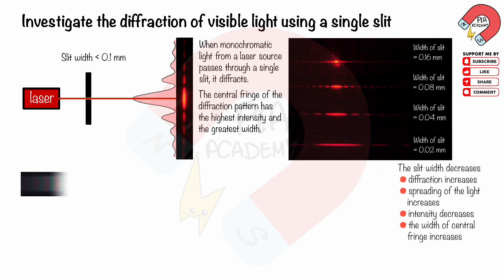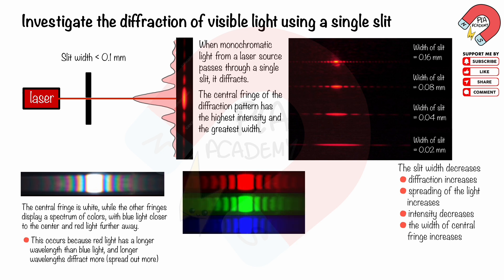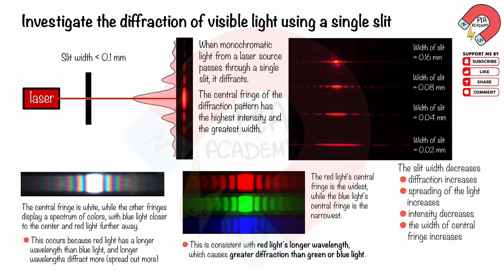The diffraction pattern of white light through a single slit shows a white central fringe, while the other fringes display a spectrum of colors with blue light closer to the center and red light further away. This occurs because red light has a longer wavelength than blue light, and longer wavelengths diffract more. The diffraction patterns of red, green, and blue light confirm that red light's central fringe is the widest and blue light's is the narrowest, consistent with red light's greater diffraction.